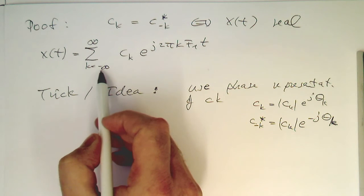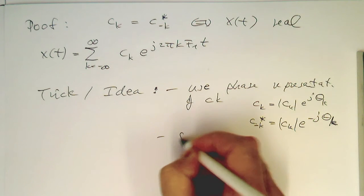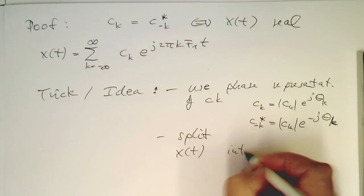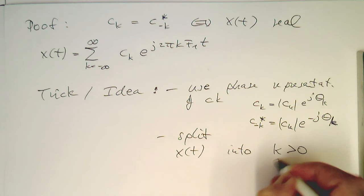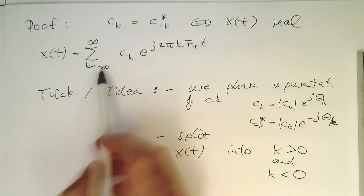So what we do now is we split this up into the negative part and into the positive part. So we split the x(t) formula into k greater than 0 and k smaller than 0. And we see already through this trick here, we basically can get rid of this minus sign just by splitting up the sequence here.